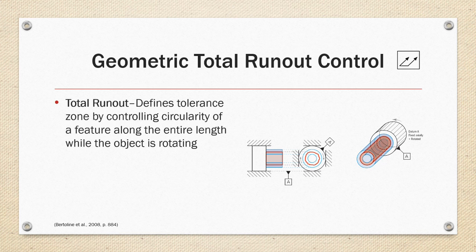Total runout defines a tolerance zone by controlling the circularity of the feature along the entire length while the object is rotating. So it also controls cylindricity and position of the center of the hole of the feature.